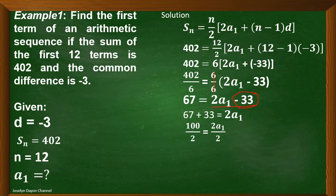So, 2a sub 1 divided by 2, that is a sub 1. And of course, 100 divided by 2 is equal to 50.